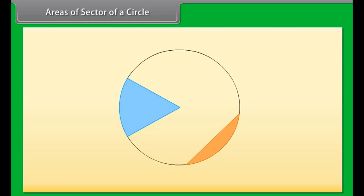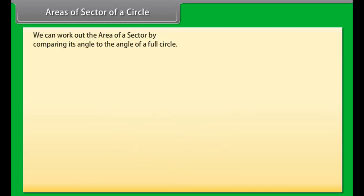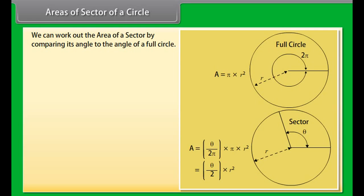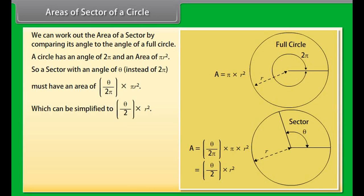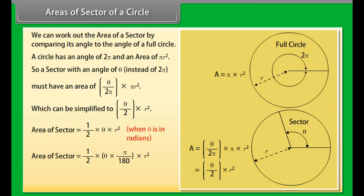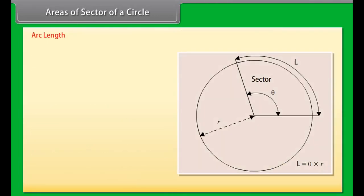Areas of Sector of a Circle. There are two main slices of a circle: the pizza slice is called a sector, and the slice made by a chord is called a segment. We can work out the area of a sector by comparing its angle to the angle of a full circle. A circle has an angle of 2 pi and an area of pi r square. So a sector with angle theta has area equal to (theta / 2 pi) times pi r square, simplified to (theta / 2) times r square. Area of sector equals (1/2) theta r square when theta is in radians. Area of sector equals (1/2) times (theta times pi / 180) times r square when theta is in degrees.